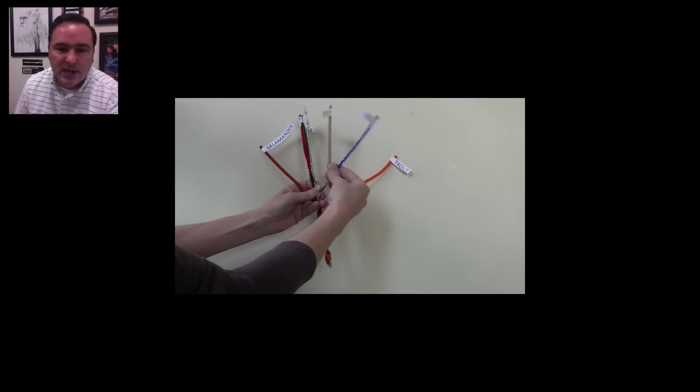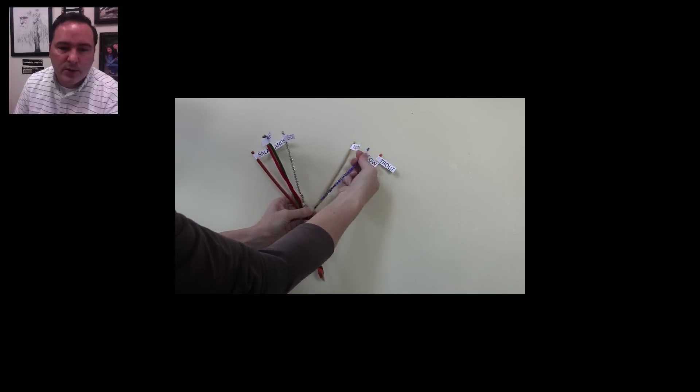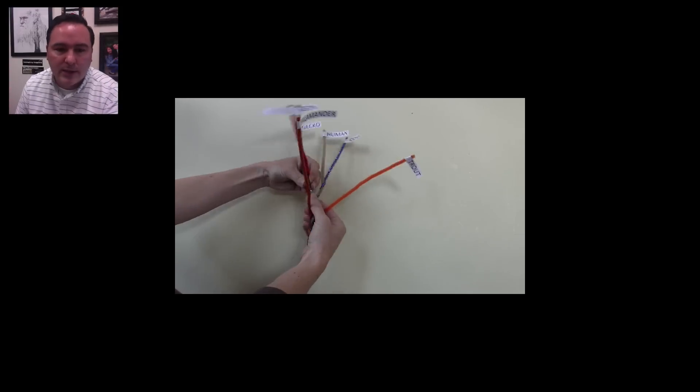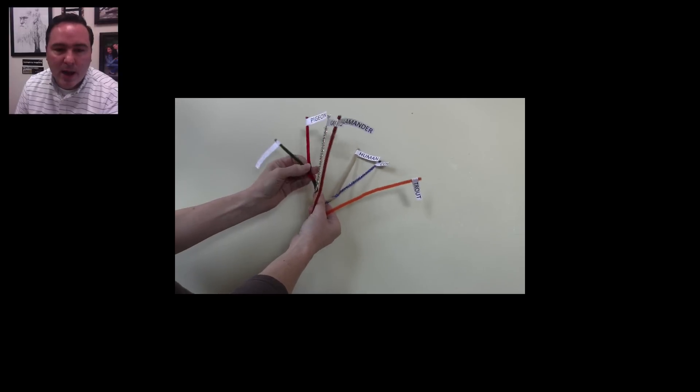Now remember, this is just like the clade race, so in essence what we're doing here is remaking the clade race. We're just doing it by twisting together pipe cleaners.